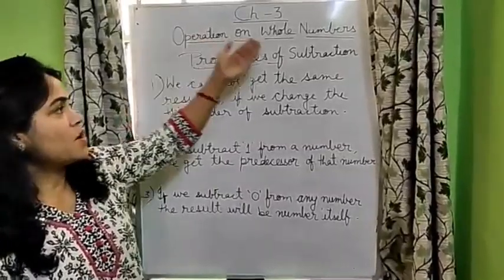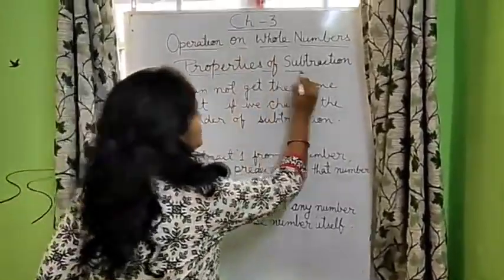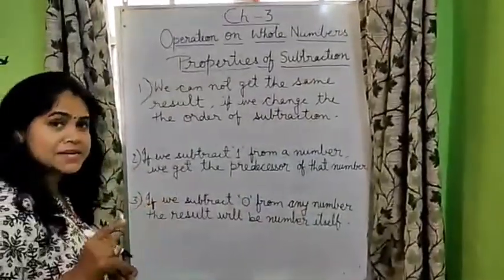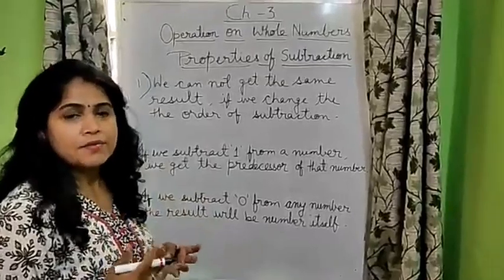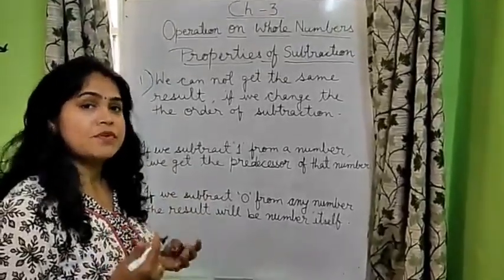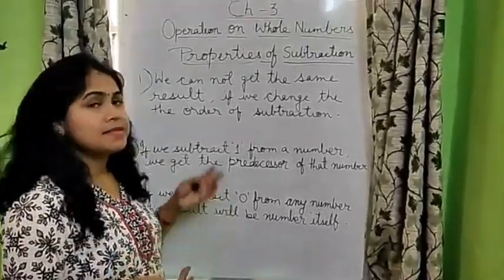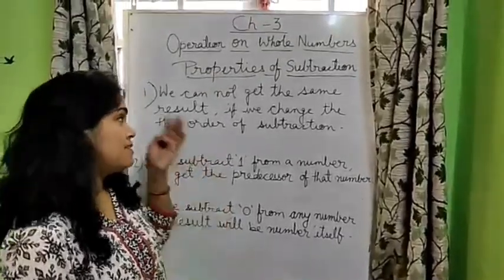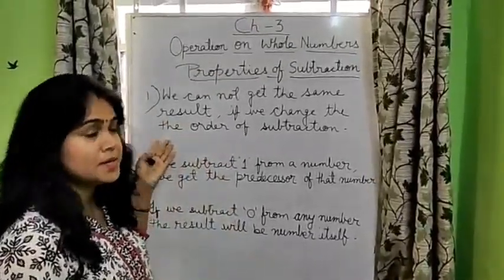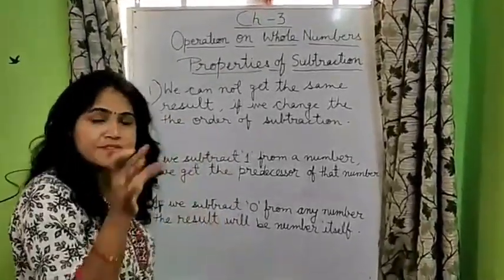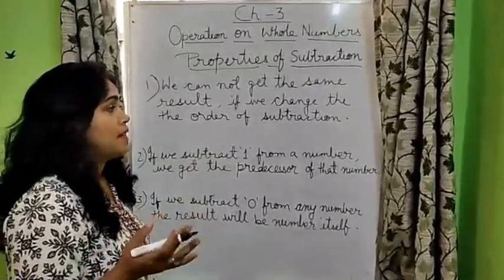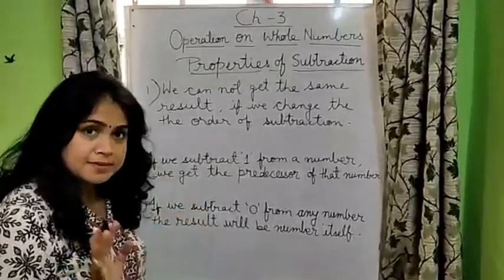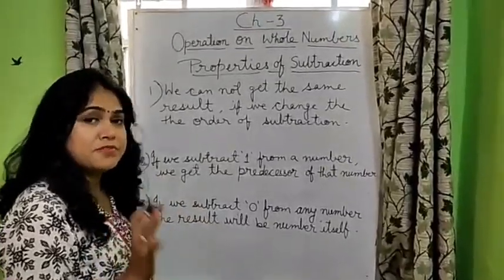Now, properties of subtraction, I will explain you. In addition, we have found that, if we change the order of addends, that means, the number which are being added, the results are same. But in subtraction, that is not the situation. In subtraction, if we change the order of the numbers which are being subtracted, we will not get the same result. That means, the difference will be different.